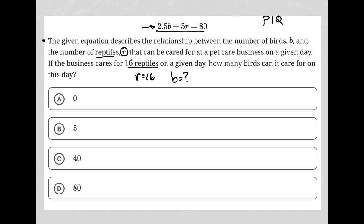Meaning that the question provided the info that I'm going to plug in here. So I have 2.5b plus 5 times 16, since I know that r is 16, is equal to 80. So that becomes 2.5b plus 5 times 16 is 80.